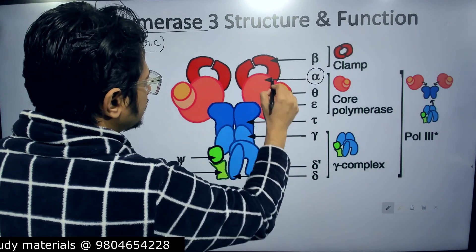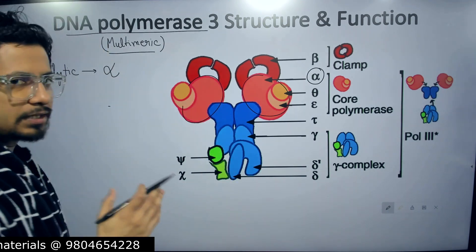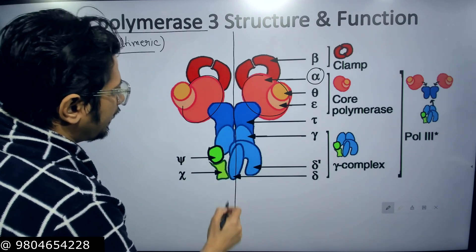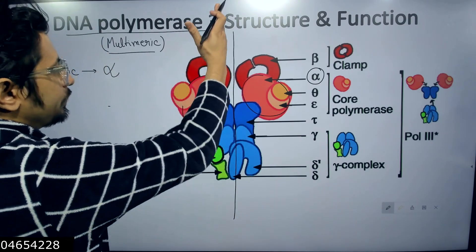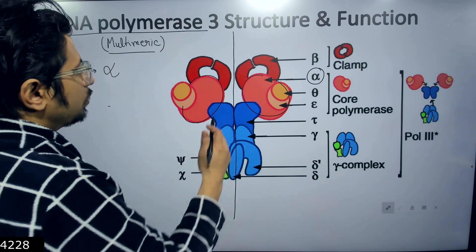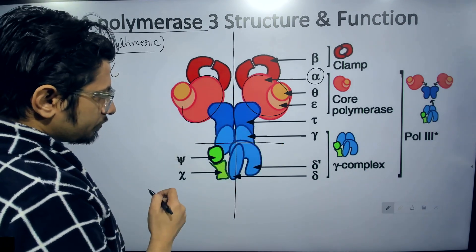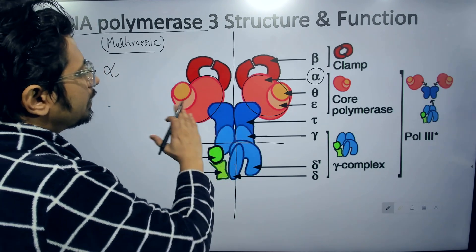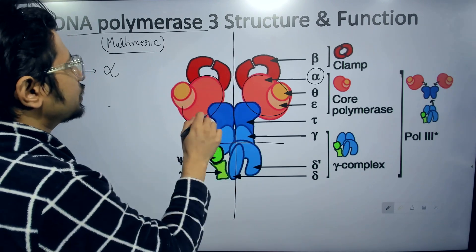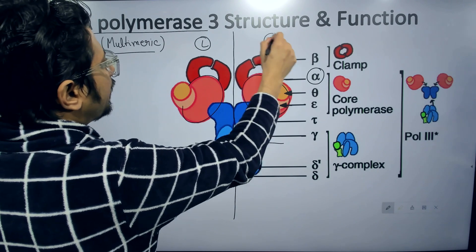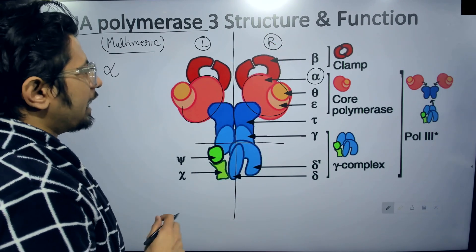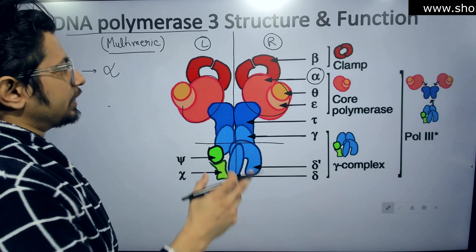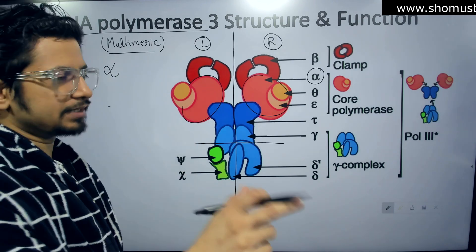Looking at the image carefully, you can see that both sides of the enzyme have very similar structures — almost like a mirror image up to the gamma subunit. Beyond gamma, the structure becomes slightly different. But up to gamma, there is an identical subunit arrangement on the left and right sides. This is important for DNA Polymerase 3 to carry out DNA replication on both the leading and lagging strands simultaneously.